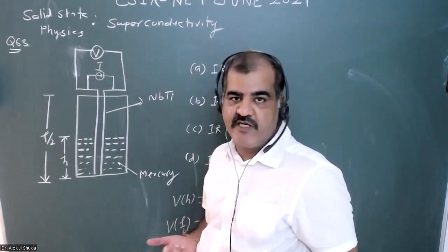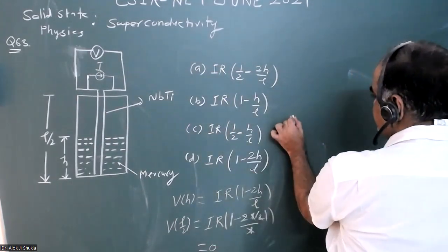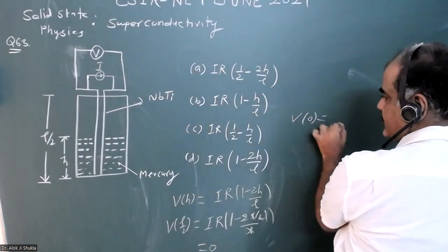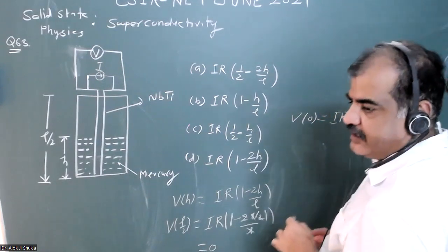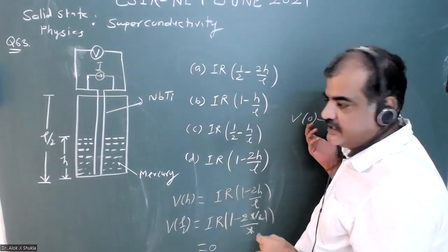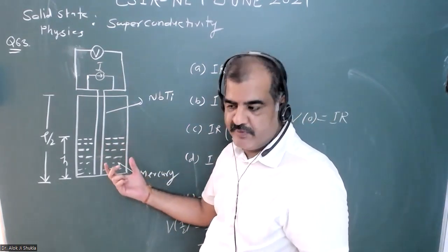If you measure the resistance, it should be V = IR. If you put h = 0 in this option, then my voltage is IR, which it should be in the normal state. The voltage across the wire can be best described by option D.